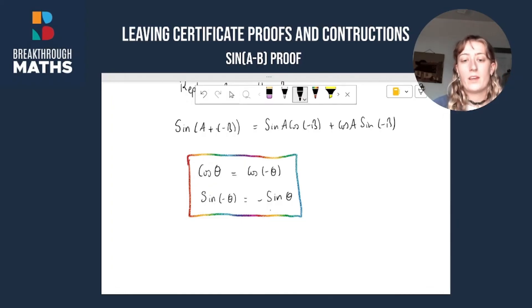Sine of A plus minus B, we've got a plus and a minus, it's going to be a minus. So we've got sine of A minus B is equal to sine A.